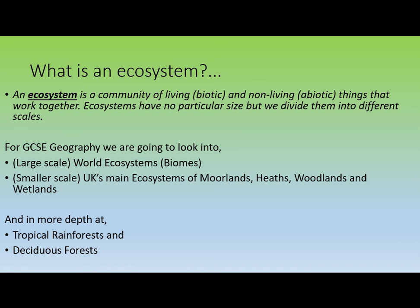We're going to look at two main branches of ecosystems: large-scale ones called biomes — tundra, desert, tropical rainforest, etc. — and then smaller-scale UK ecosystems such as moorlands, heathland, woodland, and wetlands. We'll then return to two biomes in depth: tropical rainforests and deciduous forests. The case studies are the Amazon for tropical rainforests and the New Forest for deciduous forests.